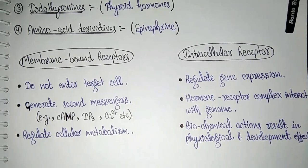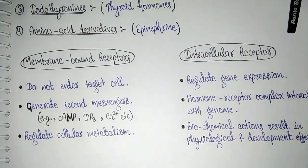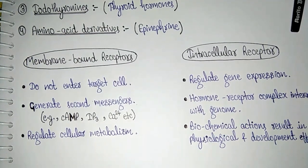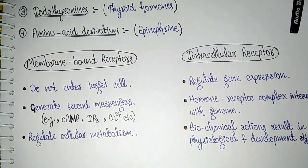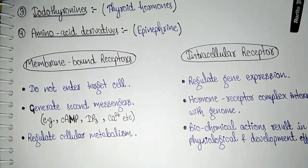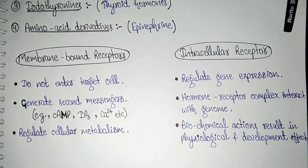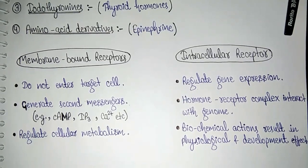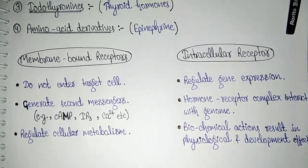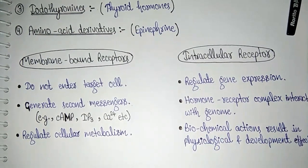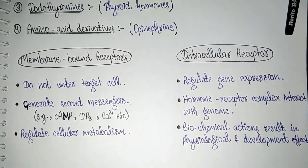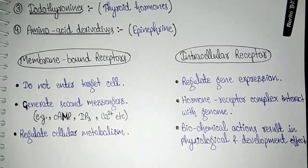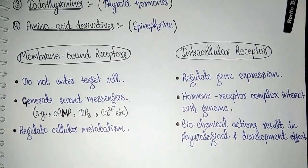Ab membrane bound receptor kya karte hai — woh jo target cell hai uske andar enter nahi karenge kyunki woh proteins ki bani hoti hai, woh lipid bilayer ko cross nahi kar sakti. Toh woh kya karte hai — jo membrane par receptor present hoti hai unke saath bind hoke hormone receptor complex banate hai. Aur phir hormone receptor complex kya karta hai — secondary messenger generate karta hai. Secondary messengers hai hamare cyclic AMP, IP3, calcium. Ab jo secondary messenger bane, woh kya karte hai — jo cellular metabolism hai, jo particular function hai us hormone ka, woh perform karte hai. Wahi agar intracellular receptor ki baat ki jaye — plasma membrane ko cross karte hai, genome ke saath interact hoke gene expression regulate karte hai, transcription and translation perform karte hai, and biochemical actions result in physiological and developmental effects.